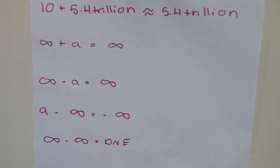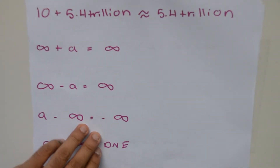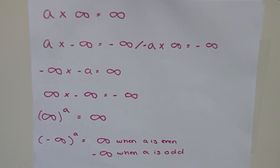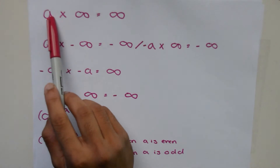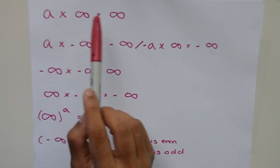Our fourth case: infinity minus infinity is undefined. Since infinities can have different values, we cannot state that infinity minus infinity equals zero. This ambiguity leaves us unable to compute the equation, since it has the ability to equal anything.